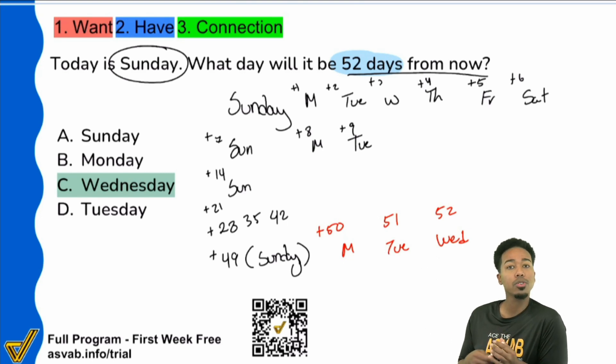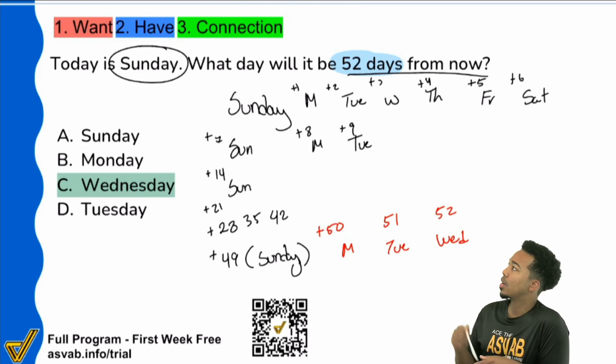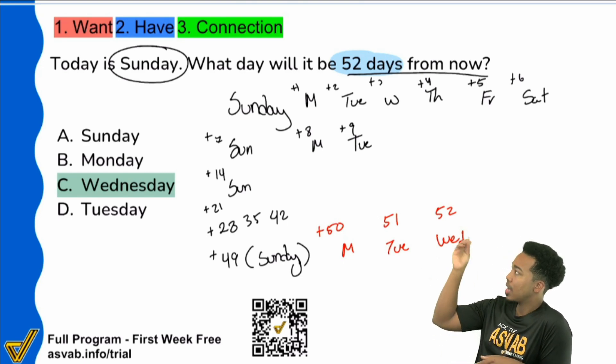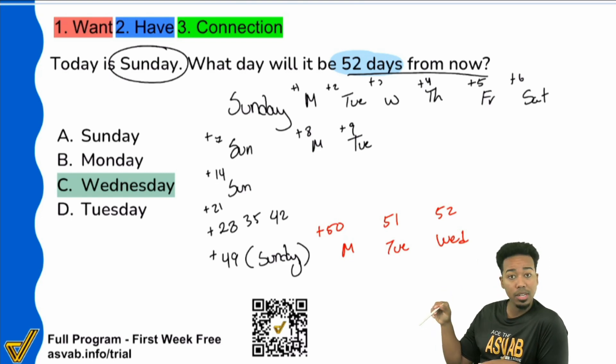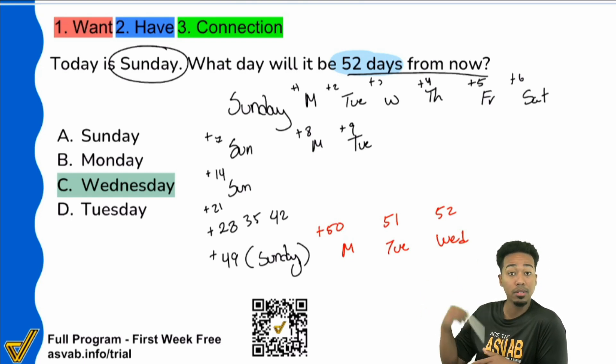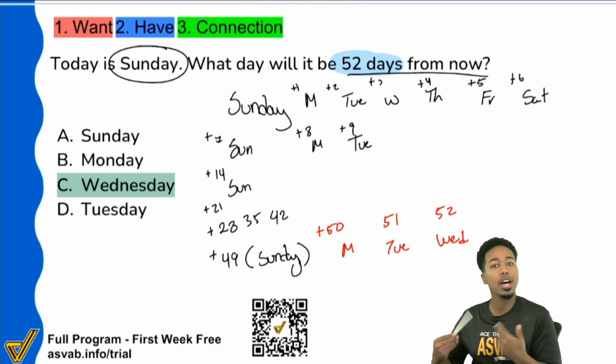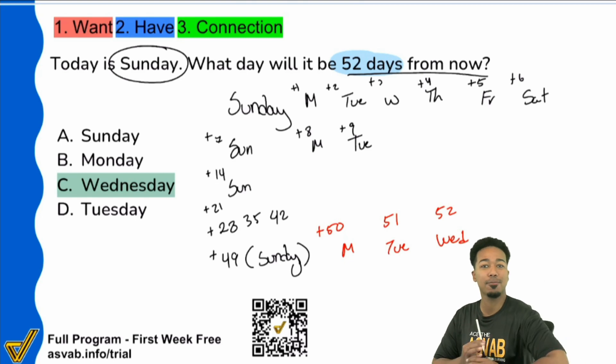Or would you rather notice: 52 — okay, if it's Sunday, it'll be Sunday on the 49th day. Then 50 is Monday, 51 Tuesday, 52 Wednesday — done. That's how quickly you can get this problem done.